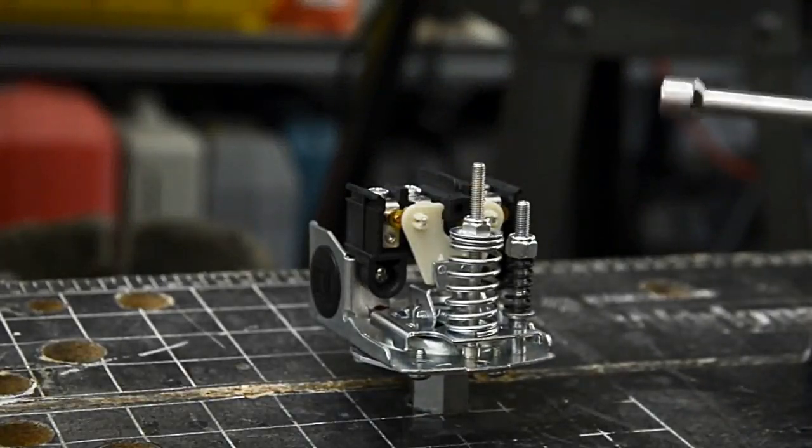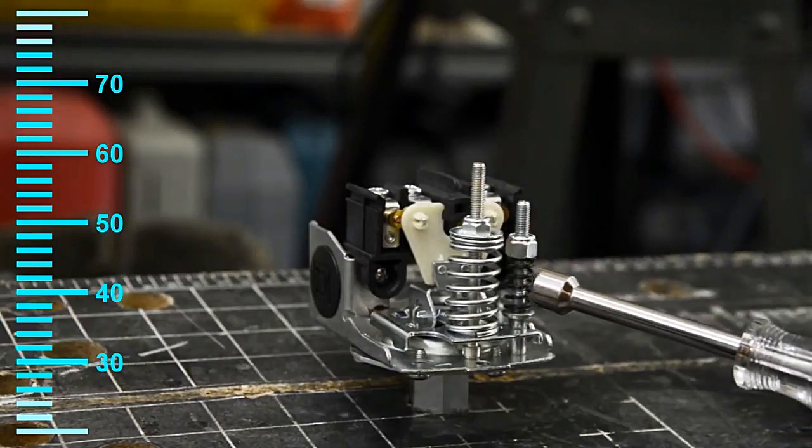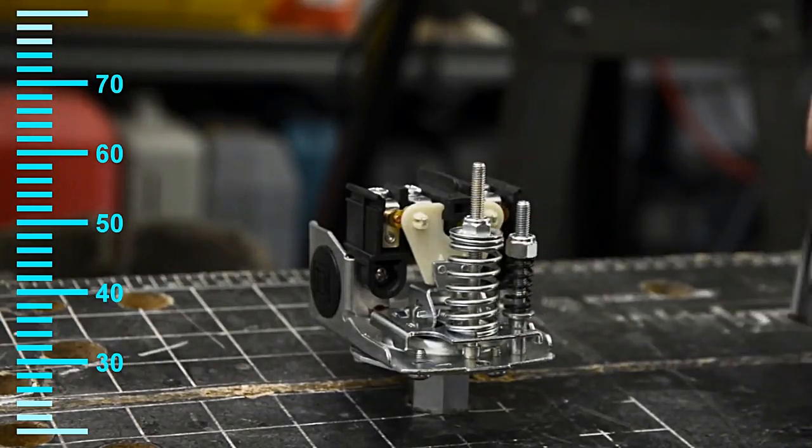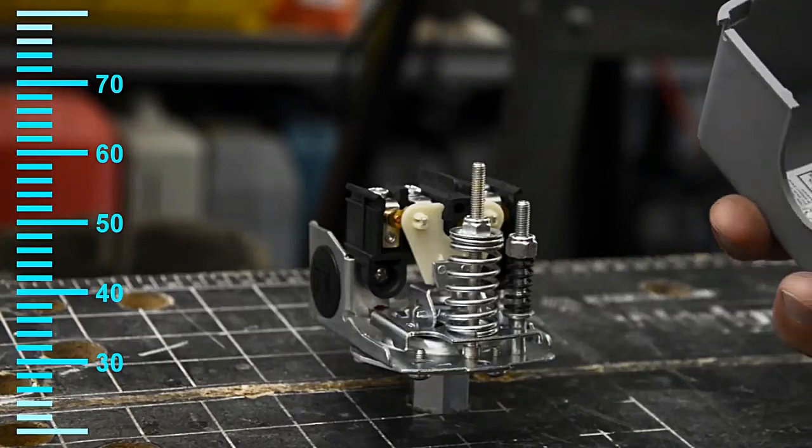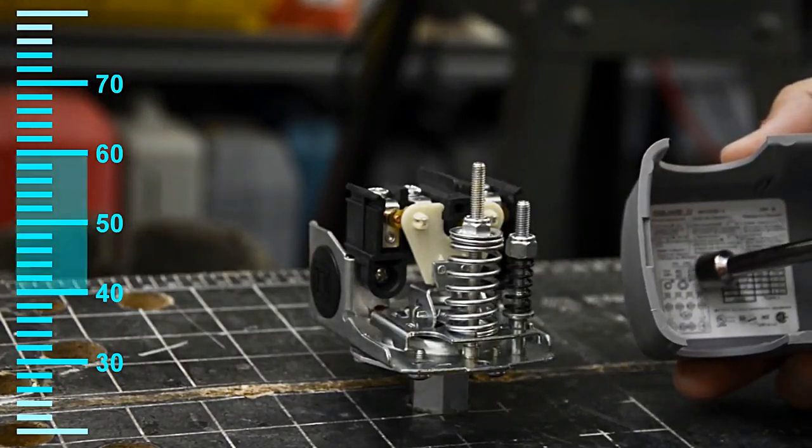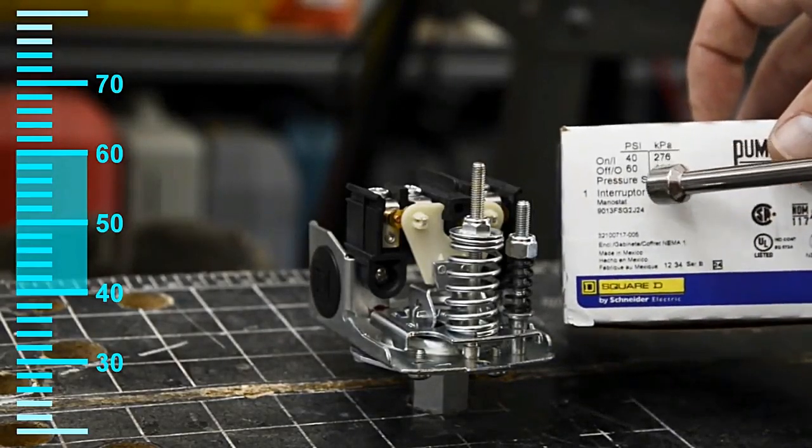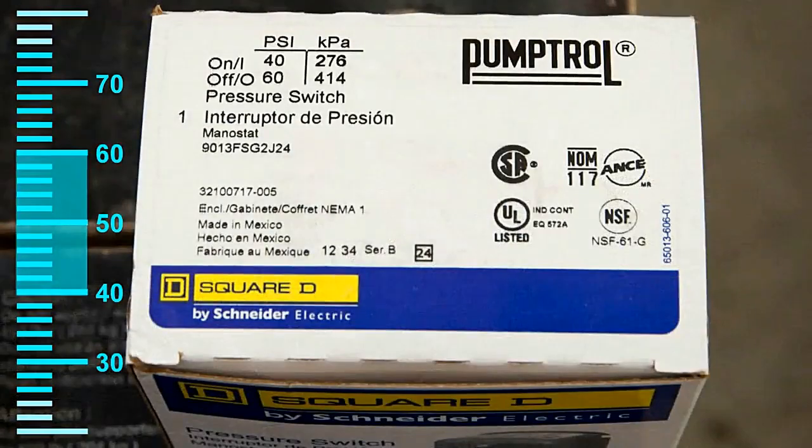Inside you'll find two adjustments. The center adjustment is your range and the range is noted in two places. It's noted inside and this is a 40-60 and it's also when you buy a new one rated 40-60. That's the most common.